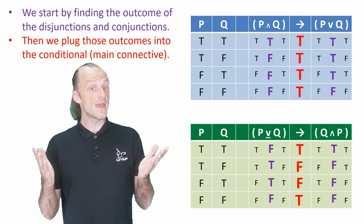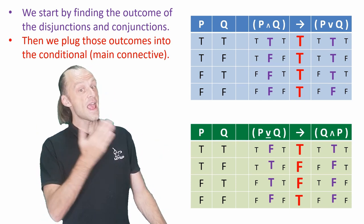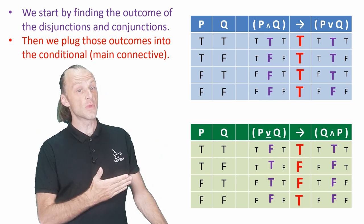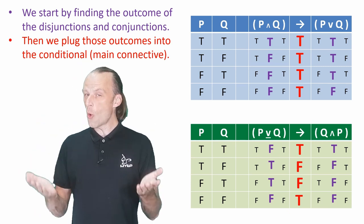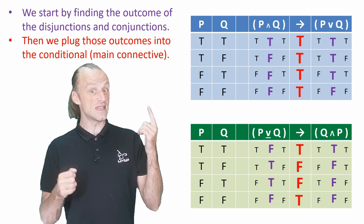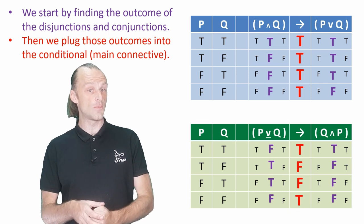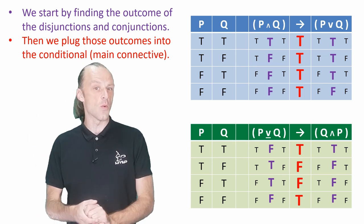What do we find? We find in the top expression every row is true, which seems to make sense. If both are true, then it is always correct to say at least one is true as well. This could not be any other way.